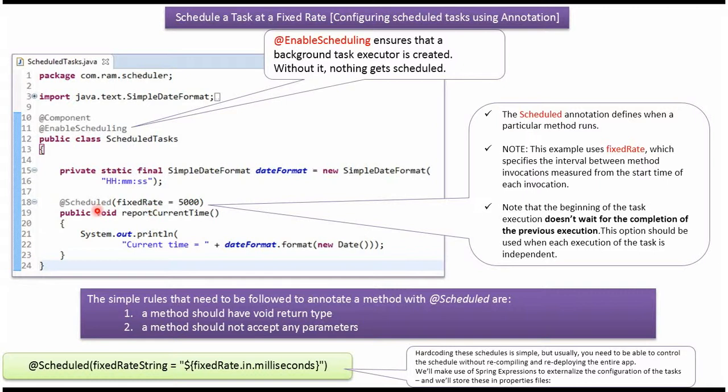Two rules we have to follow to annotate a method with @Schedule annotation. The first one is the method return type should be void, and the method should not accept any parameters.